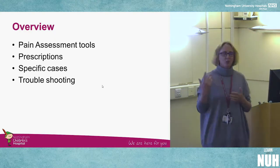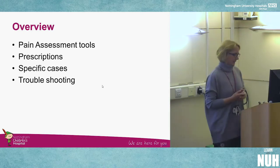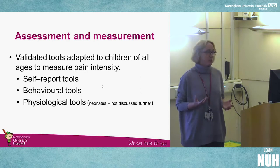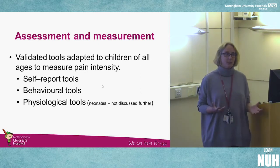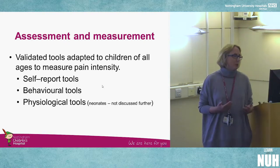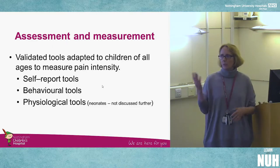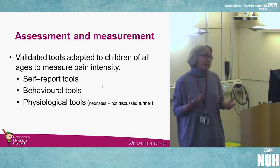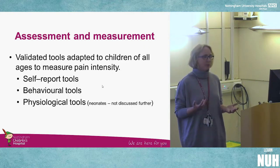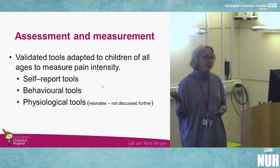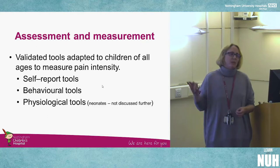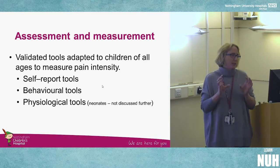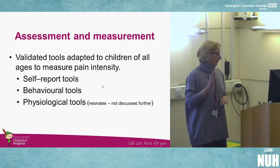People worry about assessing pain in children, thinking it's difficult or can't be done, but there's a lot of evidence to show it can be done reliably. There are lots of validated tools adapted for use in children, from neonates — NIPS and CRIES — right up to adulthood, including children with cognitive disability. Ideally we want to use a self-reporting tool, but we can move to behavioural tools, and if necessary physiological tools, though even in neonates those are incorporated into a behavioural tool with some physiological parameters included.